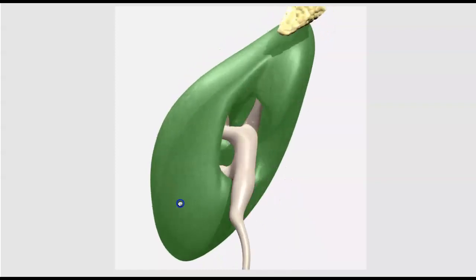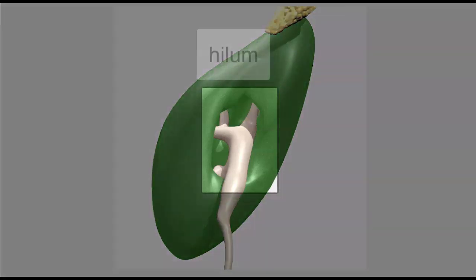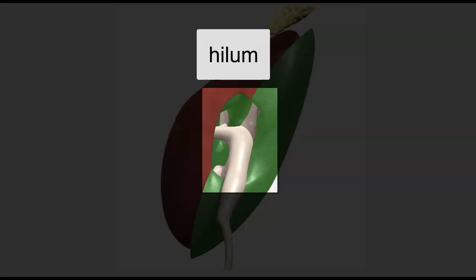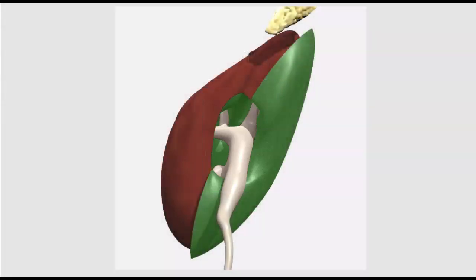Taking a look at the medial surface of the kidney, you can see that concave surface — there's an indentation where the ureter penetrates. That's called the hilum. That's also where blood vessels and nerve supply enter the kidney.